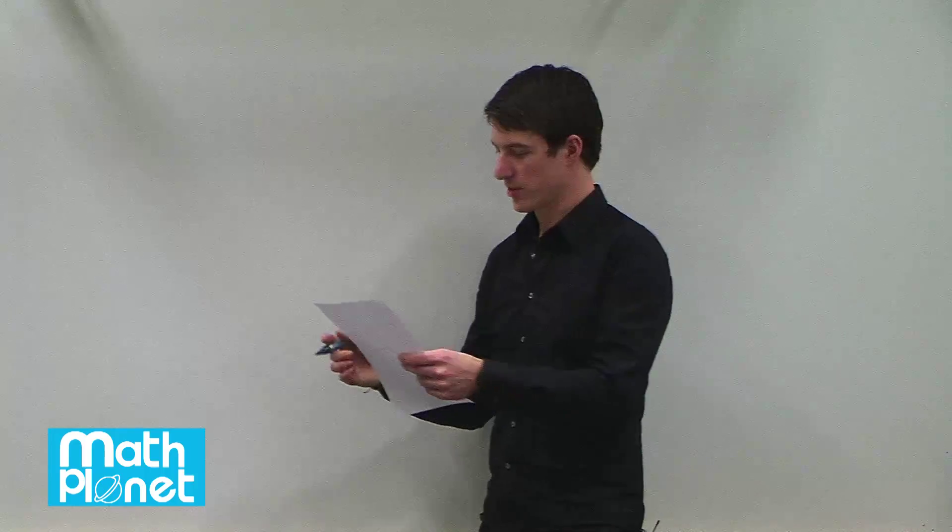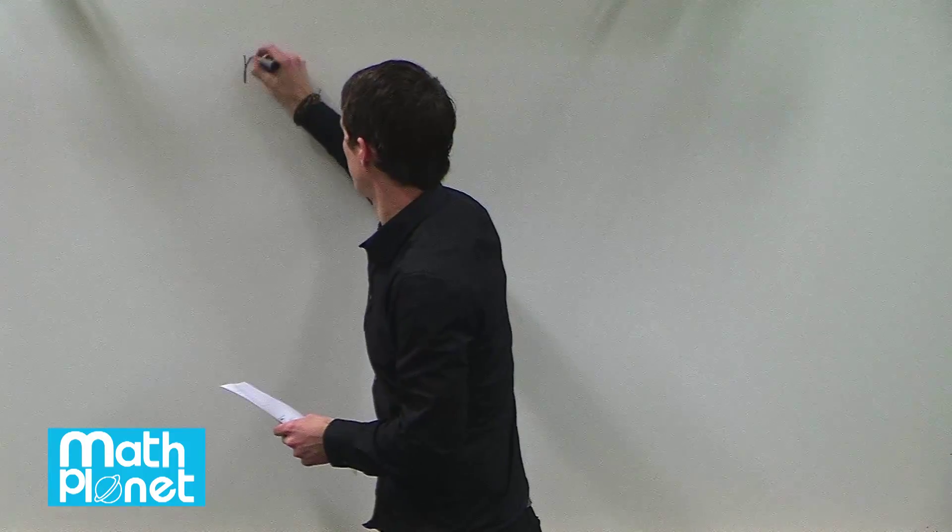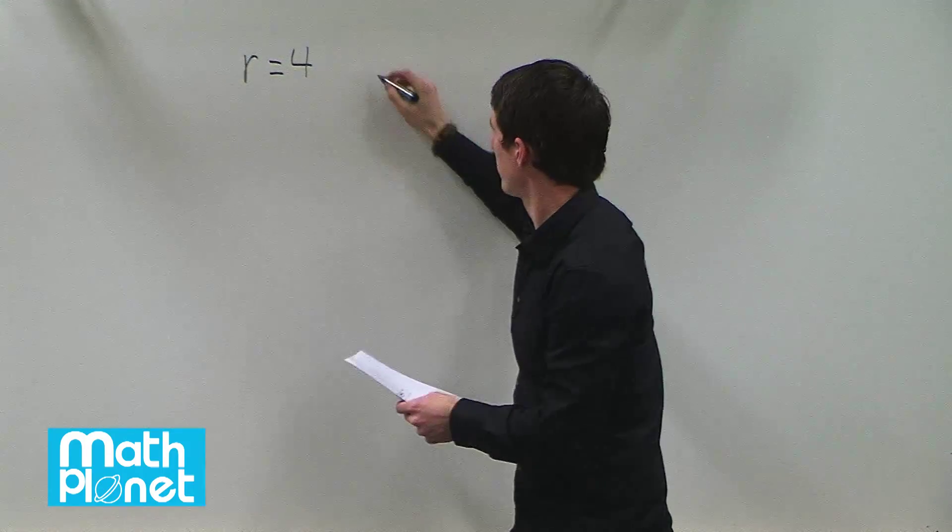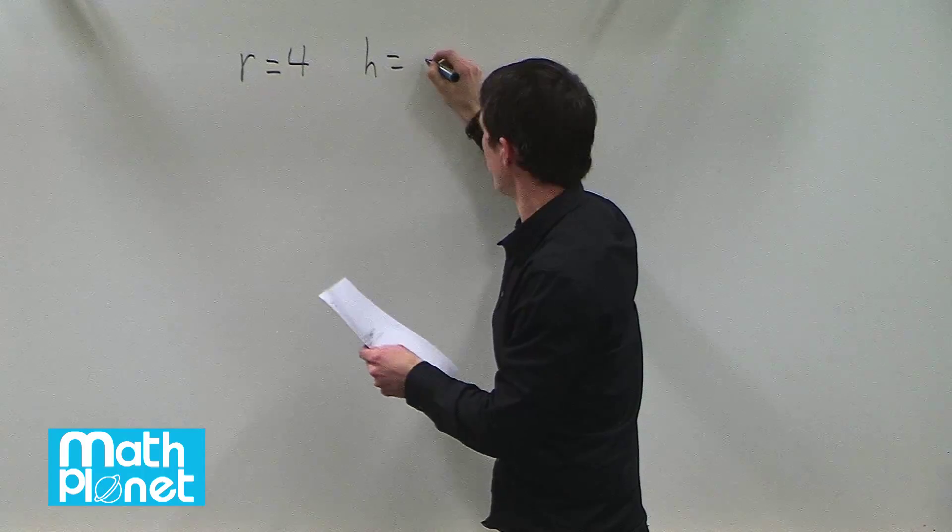For this problem let's find the surface area of a cylinder. In the cylinder we're given a radius of four and a height of eight.